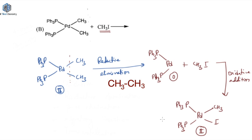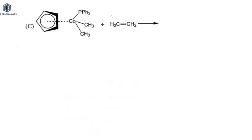So in the second reaction, the final product is the Pd(II) complex with CH3 and I ligands. Up till now we have seen reactions A and B. In reaction A, the final product was a palladium complex and along with that ethane was formed. In reaction B, in the very first step when reductive elimination happened, we got an ethane molecule. So we were getting ethane in both reactions A and B.